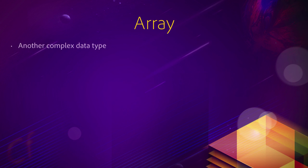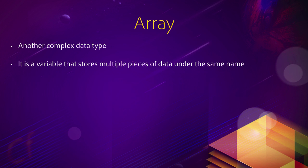An array is also a complex data type, so just like a structure, it is a variable that stores multiple pieces of data under a single variable name. But the difference between a structure and an array is that in an array, data are indexed. What does that mean, and how can we create those arrays?